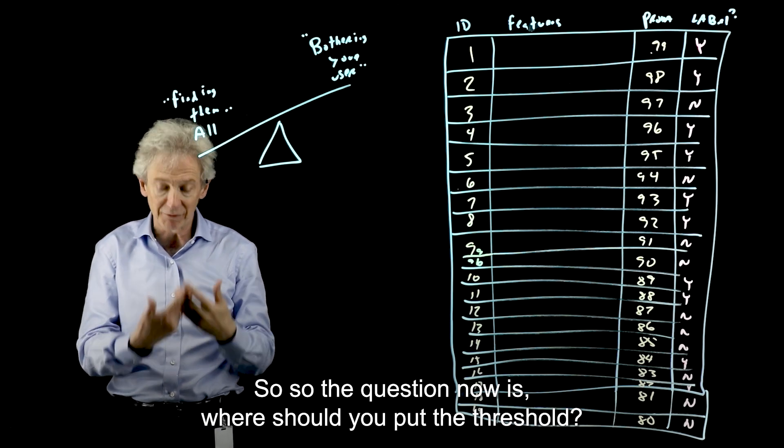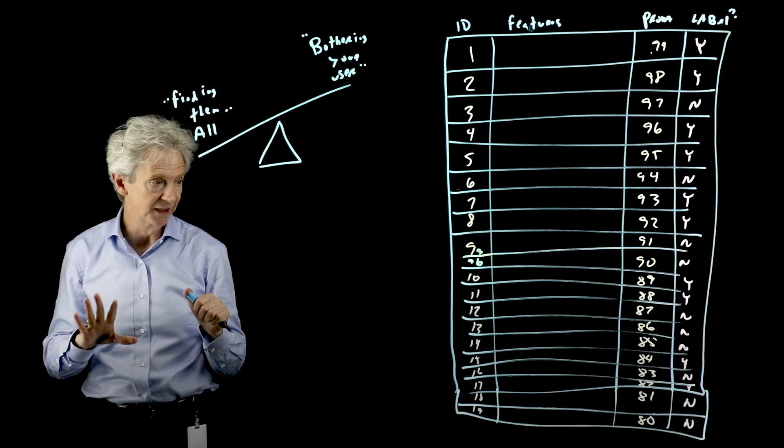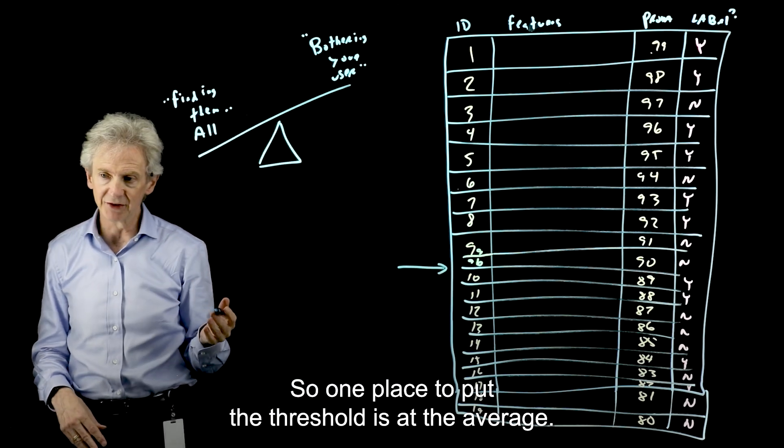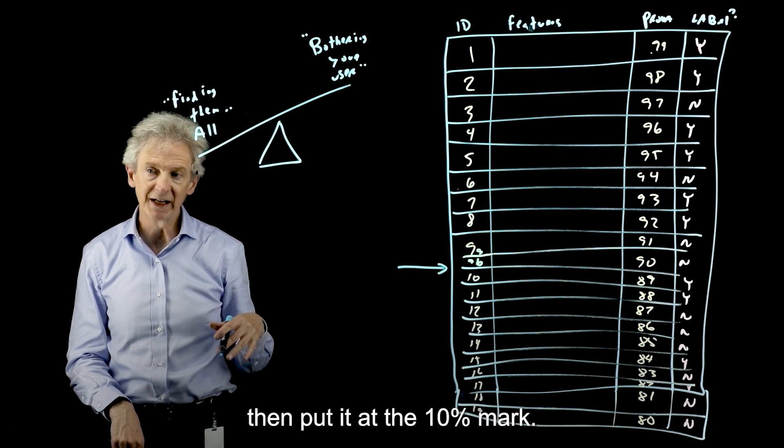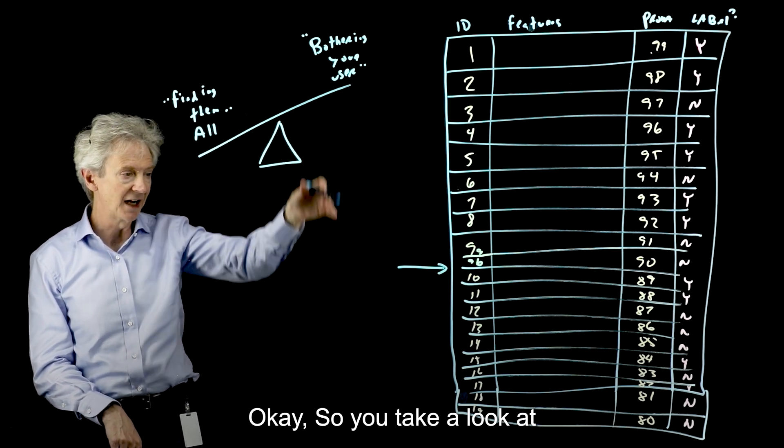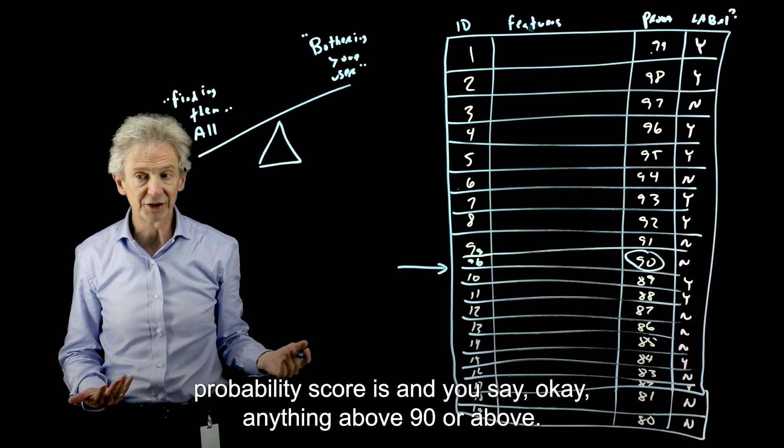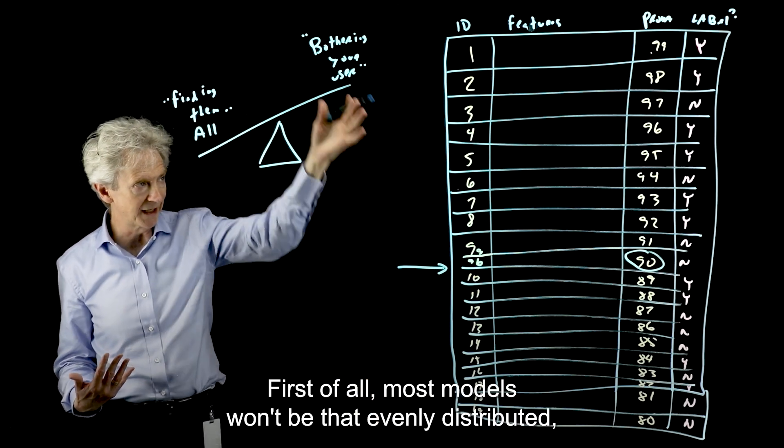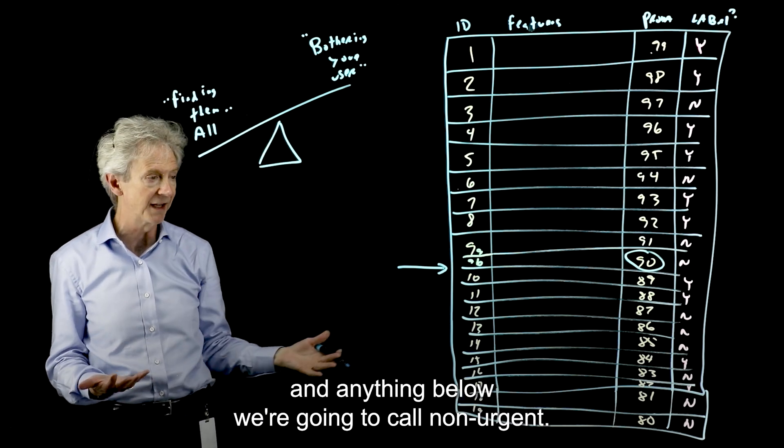So the question now is, where should you put the threshold? And I'll give you a starting place. So one place to put the threshold is at the average. So if 10% of messages are urgent, then put it at the 10% mark. So you take a look at the top 10 messages in this case. You'd see where that probability score is. And you say, okay, anything above 90 or above. First of all, most models won't be that evenly distributed. But anything above that number, we're going to call urgent. And anything below, we're going to call non-urgent.